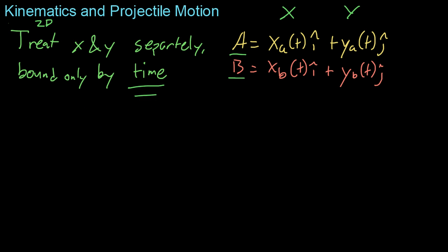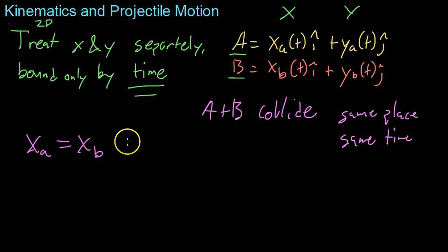For example, if we want to have A and B collide, what needs to happen? They have to be at the same place at the same time. Mathematically, what has to happen is that the X-position of A has to equal the X-position of B, and then the Y-position of A has to equal the Y-position of B.